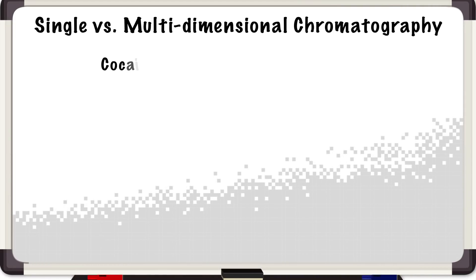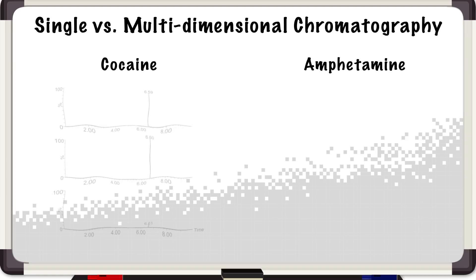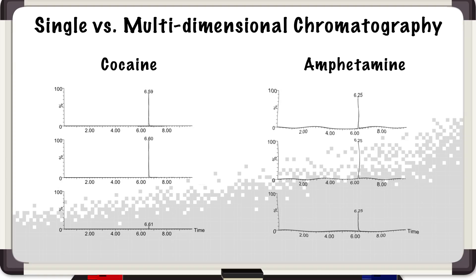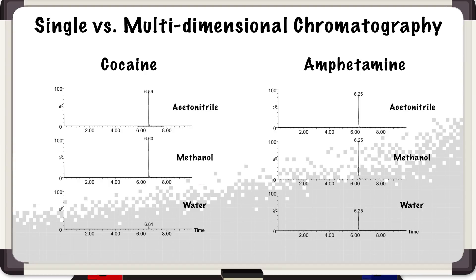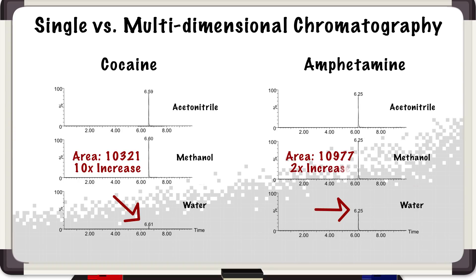In the world of single-dimension chromatography, we have a scenario where we can only inject a strictly aqueous extract, but in 2D mode, we can inject not only aqueous-based but also organic-based material. On the bottom chromatogram, you can see we have two metabolites — cocaine and amphetamines. We see a very low signal due to exchange scenarios on the glass vial. But when we convert to an organic extract from SPE material, we were surprised to see at least a 10x or 2x increase in sensitivity. That's the power of the multidimensional chromatography concept.